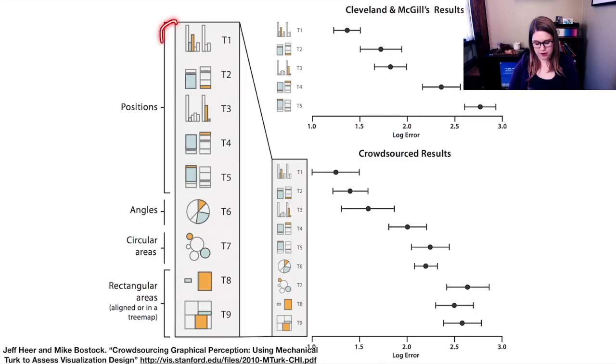And then they did basically the same thing. They did all those positions. They did angle. They did areas, both circular and rectangular areas, either aligned or in a tree map.